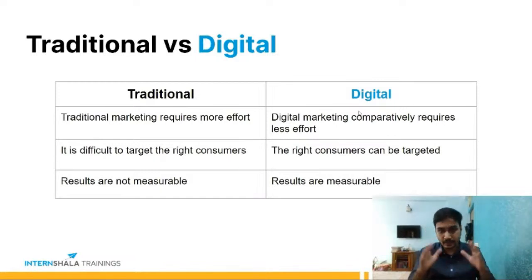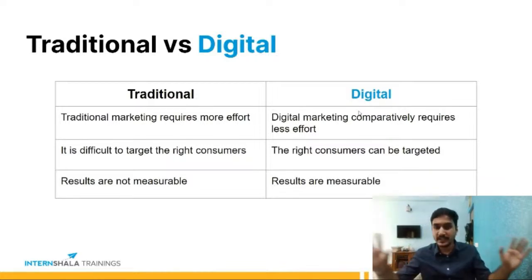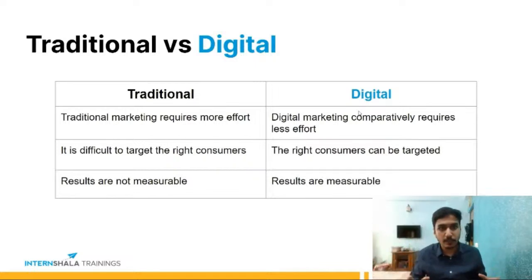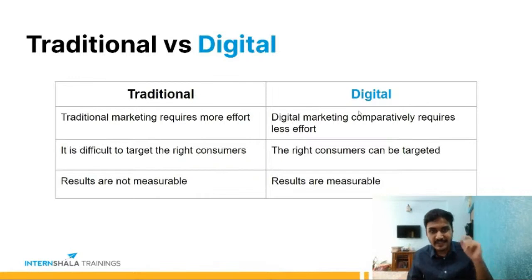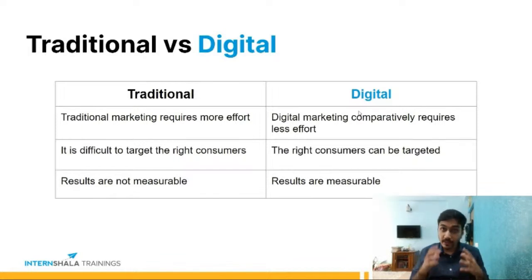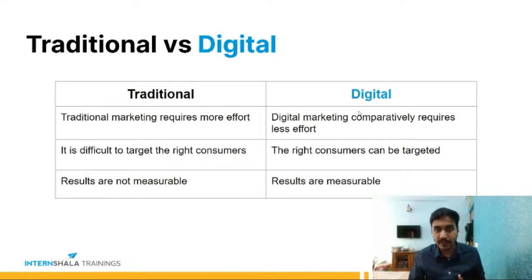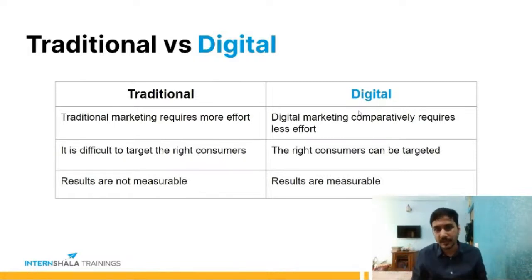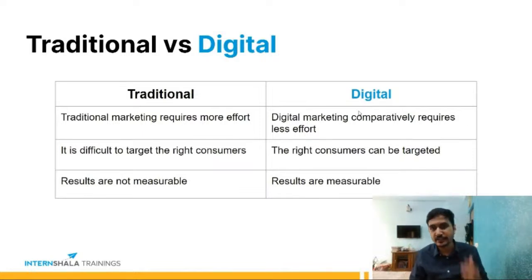These three points — effort, targeting, and measurability — are the main differences between traditional and digital marketing. This doesn't mean traditional marketing is obsolete; for mass awareness, it's still one of the best, since many people still watch TV and notice billboards. But when it comes to specifically selling to a specific group of people, digital marketing wins every time. That's why new companies with limited budgets start with digital marketing, then grow and mix in traditional marketing. There needs to be a healthy balance, but for a new person starting out, digital marketing is the way to go.